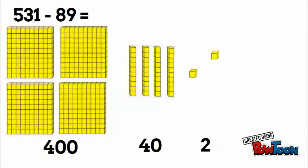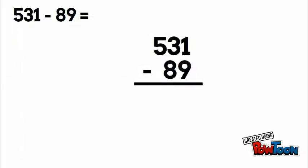Let's look at what that would look like with the written method again. 531 minus 89. Make sure you line up your ones and tens correctly.